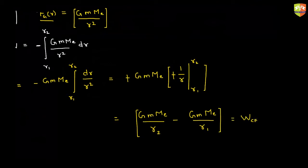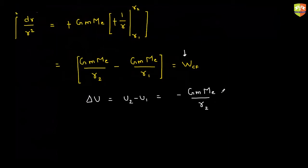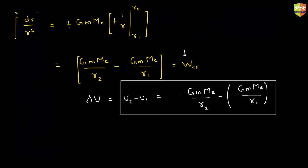The change in potential energy was defined as u2 minus u1 equals negative of the work done by the conservative force. So this gives: minus G m m_e by r2, minus of minus G m m_e by r1. This is u2 minus u1. Now, can you tell me what is u2 and what is u1?